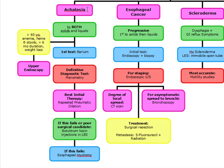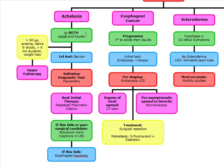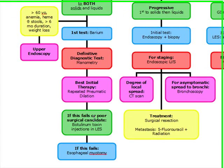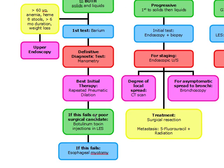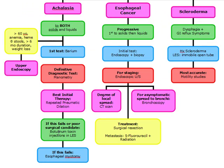To summarize achalasia: dysphagia to solids and liquids simultaneously. Start off with barium, confirm with manometry. If they have any of these risk factors, we're going to do an upper endoscopy. Our best initial therapy is repeated pneumatic dilation. If that fails, we're going to do botulinum toxin. If they're a poor surgical candidate or refuse pneumatic dilation or surgery, we also do botulinum toxin. And if that fails, we do esophageal myotomy.